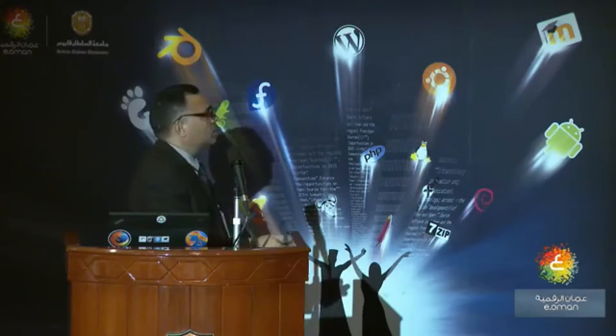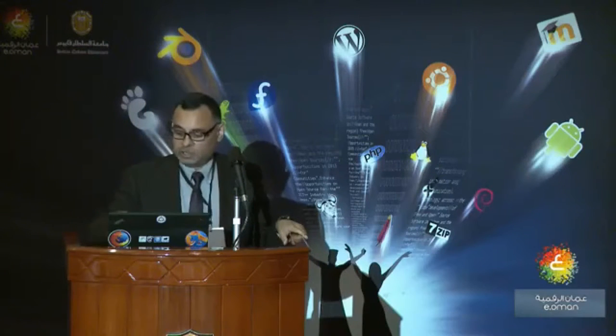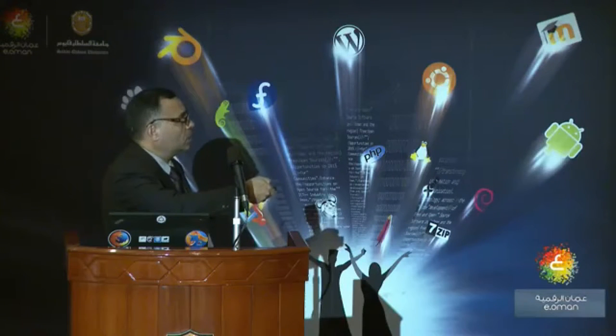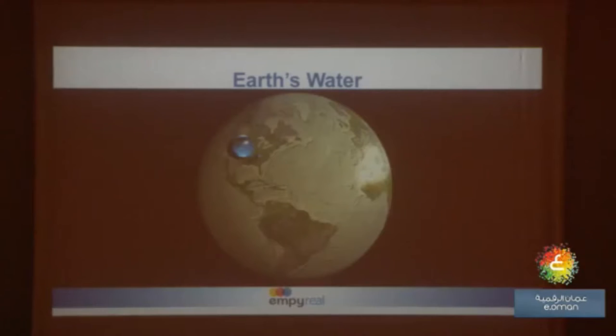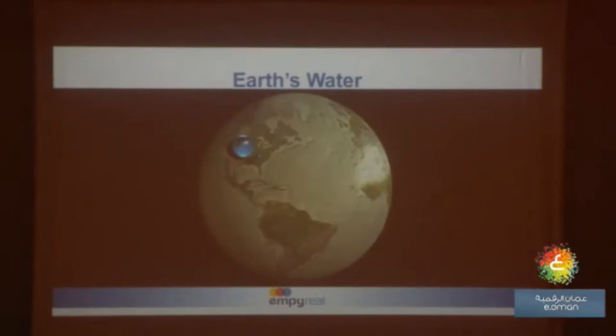This is a very interesting slide — it gives you a pictorial view of how bad the situation is. If this is the earth, largely covered with water in oceans, the larger blue circle you see here is the total water available that can be converted to drinking water. The smaller circle is the only water available for drinking — the surface water you can extract for daily use without spending too much money. We have a very small quantity of water available, and if we do not act now, this sphere is going to become smaller and the situation extremely alarming.